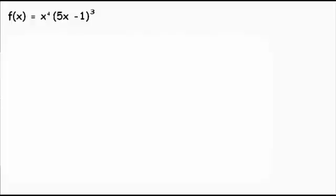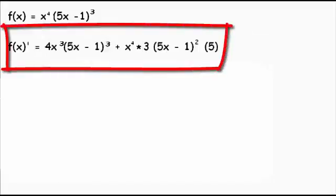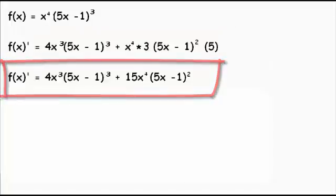So here I'll start off with our original function. f of x is equal to x to the power of 4 multiplied by 5x minus 1 all to the power of 3. Now if we take the derivative, we'll follow exactly what we did previously until this point.